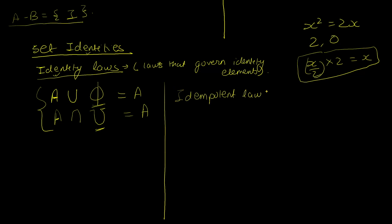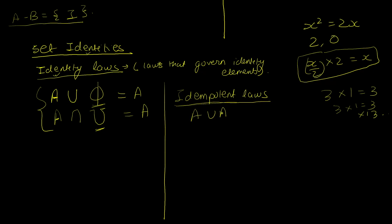The next set of laws are called the idempotent laws. Idempotent refers to a process that can be applied any number of times without changing the result. In set theory, A union A equals A, and A intersection A equals A. Repeating the operation with the same set any number of times still yields the same set.